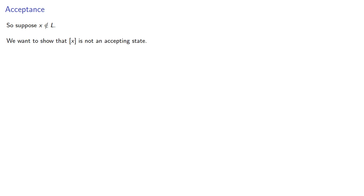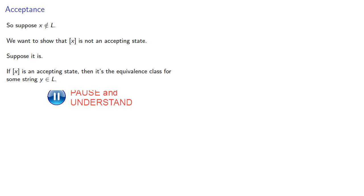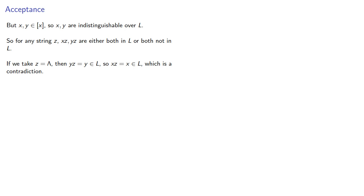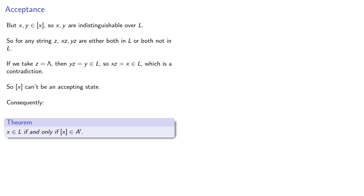Suppose x is not in our language. We want to show that the equivalence class of x is not an accepting state. Suppose it is. If the equivalence class of x is an accepting state, then it's the equivalence class for some string y in our language. So y has to be in the equivalence class. But since x and y are both in the equivalence class, x and y are indistinguishable over L. So for any string z, xz and yz are either both in L or both not in L. But if we take the empty string, then yz — y is in L — so x must also be in L, which is a contradiction. So the equivalence class of x can't be an accepting state. Consequently, x is in our language if and only if the equivalence class of x is an accepting state.